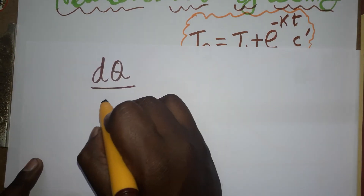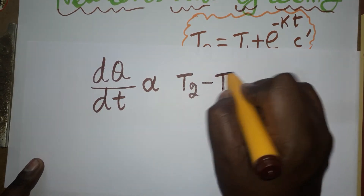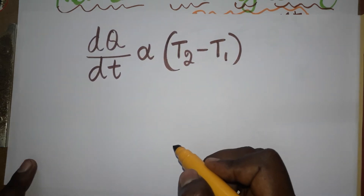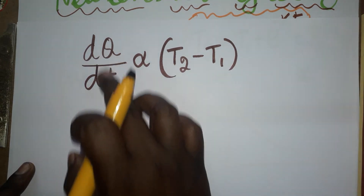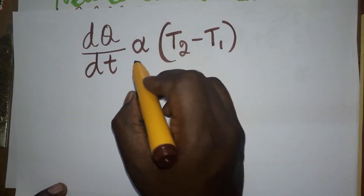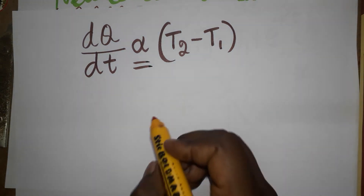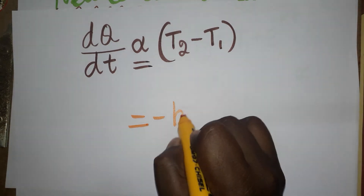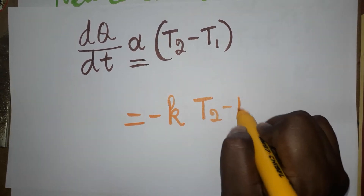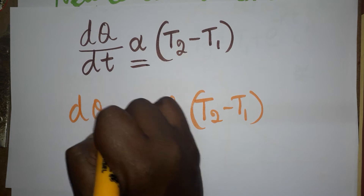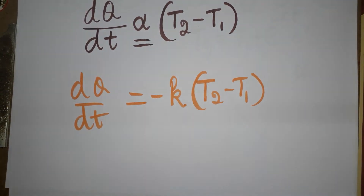The changing heat energy Q with respect to time is directly proportional to the change in temperature. Temperature is inversely proportional to time — so heat energy also decreases as time increases. dQ/dt is directly proportional to the change in temperature. Removing the proportional sign, we include a constant k, giving us: dQ/dt equals minus k times (T2 minus T1).